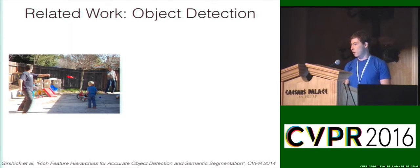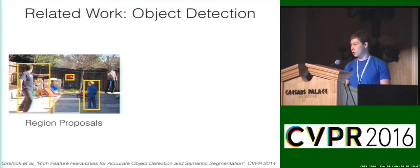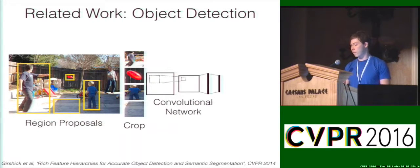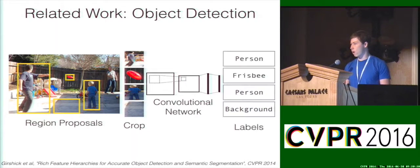In the popular RCNN method for object detection, a region proposal method such as selective search is first used to extract a set of candidate regions in the image. Next, these regions are cropped and resized to a fixed scale, and processed independently by a convolutional network, which produces a predicted label for each of these regions.